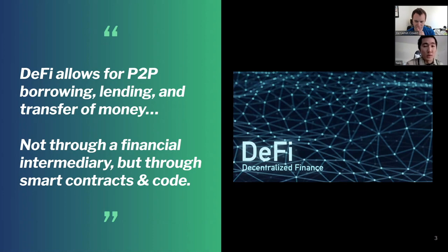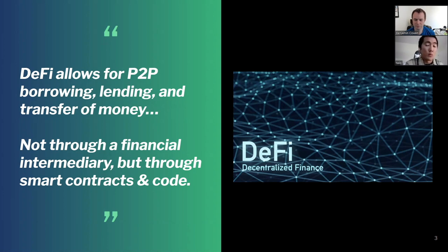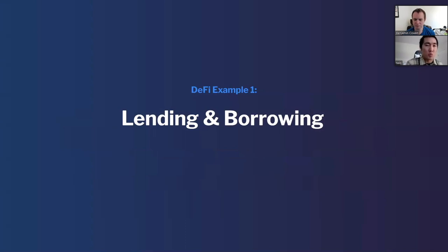When I think about DeFi, it's a killer use case for Ethereum and blockchain because it essentially allows for peer-to-peer borrowing, lending, and transfer of money — not through a financial intermediary, but through smart contracts and code. DeFi essentially says: let's remove the middleman and see what happens. To understand its power, let's go over two protocols.